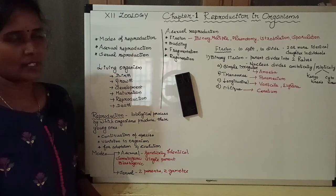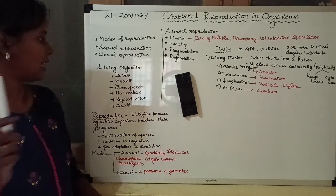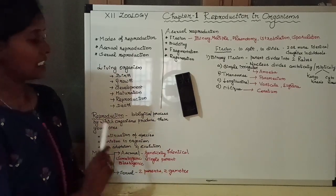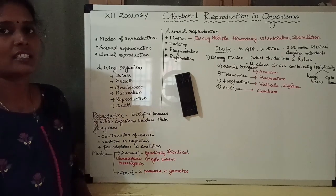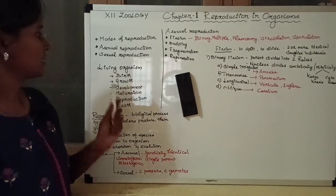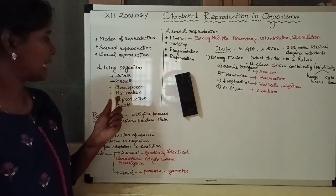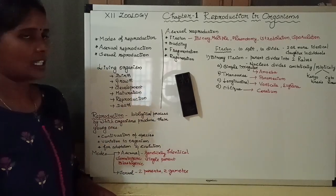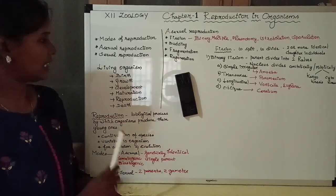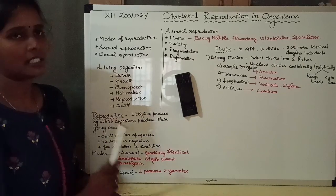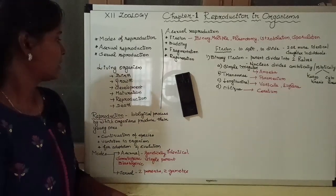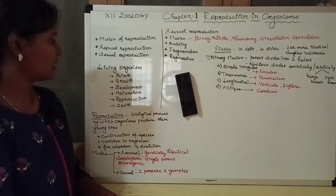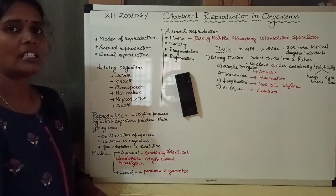When you consider living organisms, they exhibit 6 vital characteristics: birth, growth, development, maturation, reproduction, and death. These are the vital characteristics of living organisms. In this chapter, we are going to discuss about reproduction in full detail.